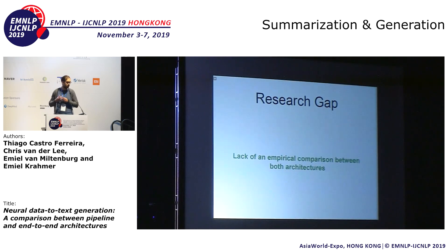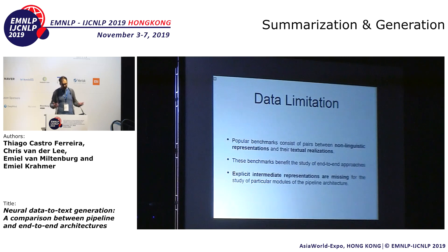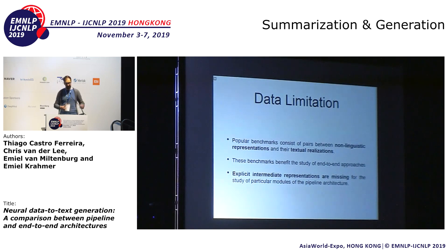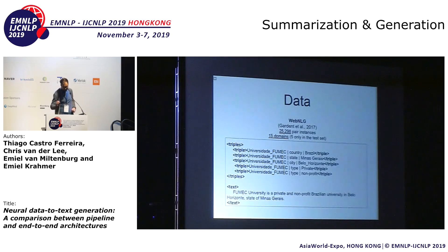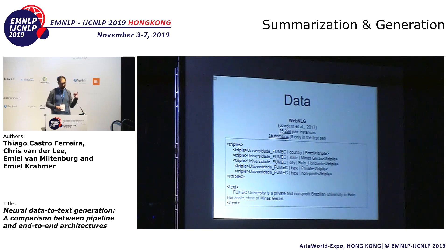Usually people assume that the pipeline architecture is more of a traditional rule-based system, but there's not really a reason why a pipeline architecture cannot be a neural system. There is a practical limitation though: most datasets only contain the data representation and their aligned textual outcome. This works well for end-to-end approaches, but if you want to build a neural pipeline module, you need explicit intermediate representations as well. An example of a dataset commonly used for these tasks is the WebNLG dataset, which we also used for our experiment. It contains around 25,000 instances where you have RDF triples and their textual realization.